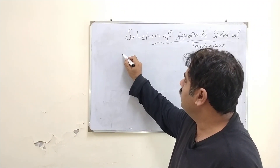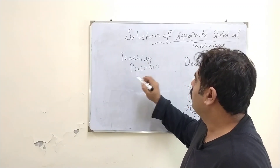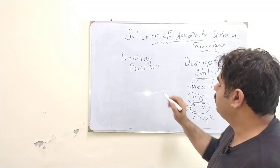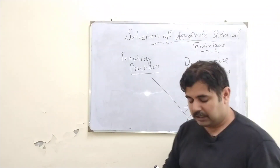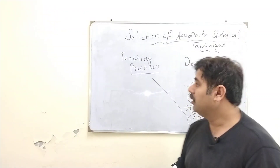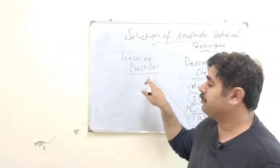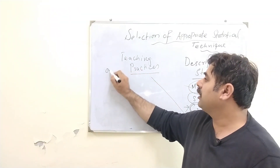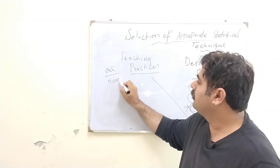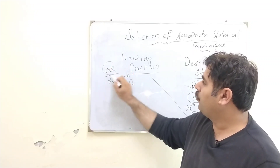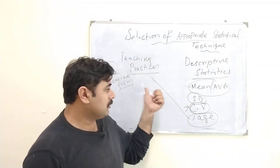If the purpose is to examine the teaching practices of prospective teachers and you collect data through observations, then you calculate percentages — how much percentage a particular teaching practice is occurring. Here your purpose is to identify teaching practices, you have only one variable measured in nominal form, and for this you calculate percentages.